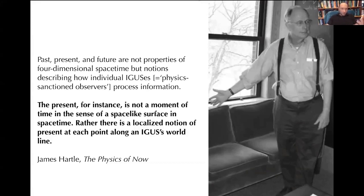So here's a very influential paper by James Hartle called The Physics of Now. James Hartle is a physicist who worked with Stephen Hawking and others. He writes that past, present and future are not properties of four dimensional space time, but notions describing how individual IGUSs, which just means information gathering and utilizing system, which is like a physics sanctioned model of an observer of us, how they process information. The present in this case is not a moment of time in sense of a spacelike surface in spacetime, but there's a localized notion of present at each point along one of these observers, these IGUS world lines.